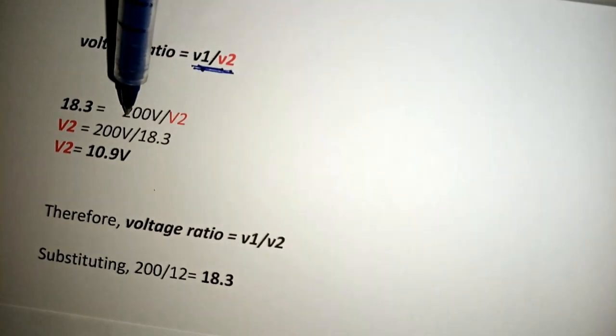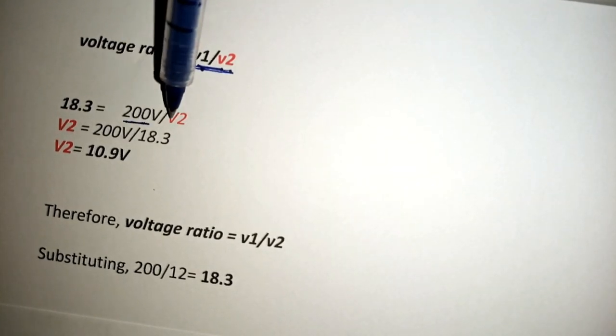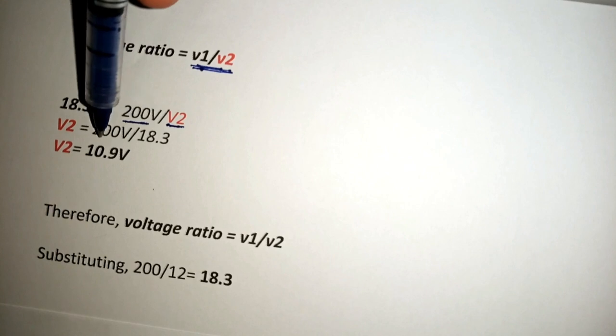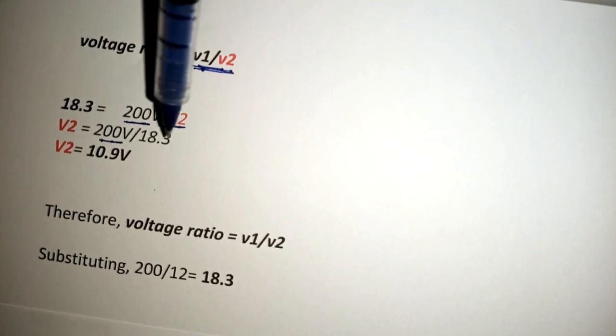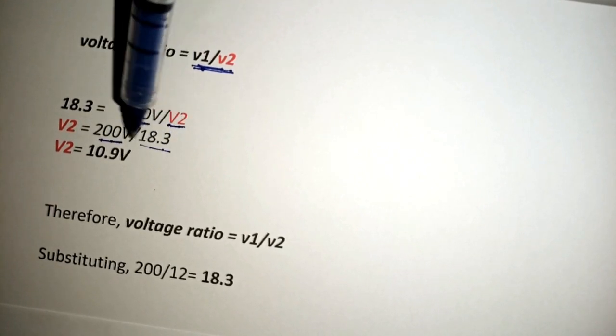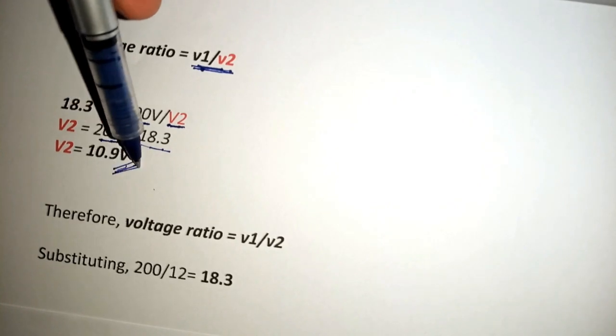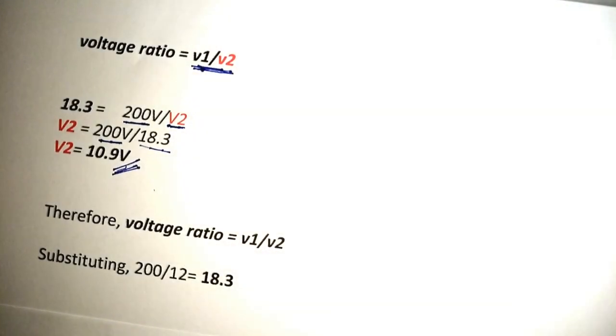So we have 18.3 equals to 200 divided by V2. Making V2 the subject, we now have 200 divided by 18.3 which equals to 10.9 volts.